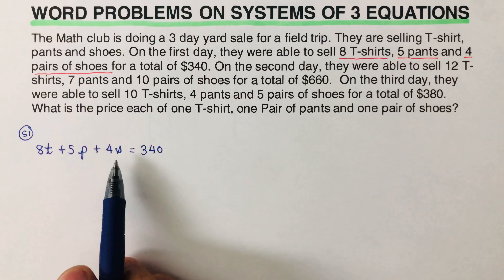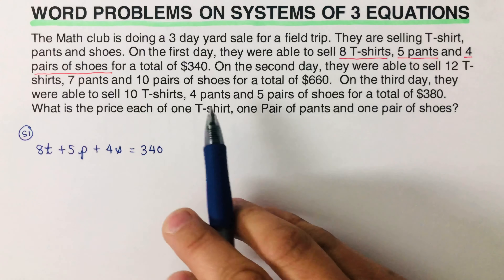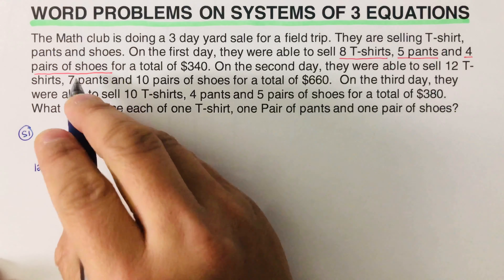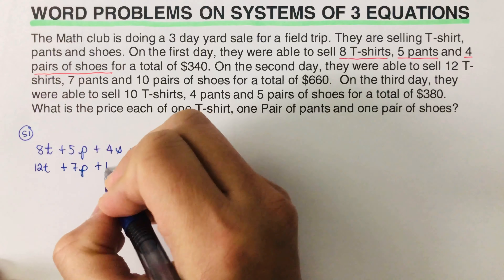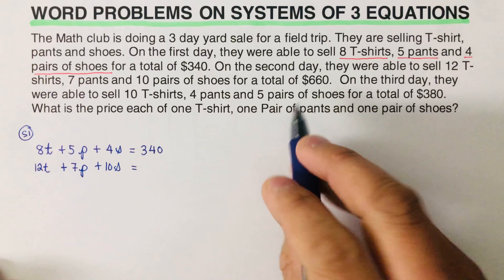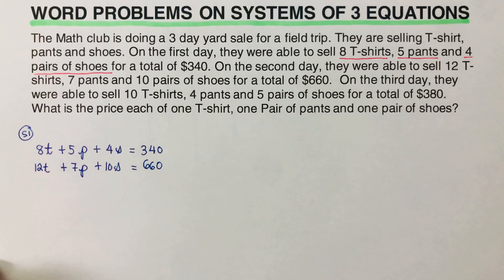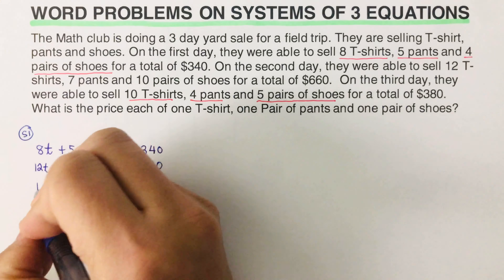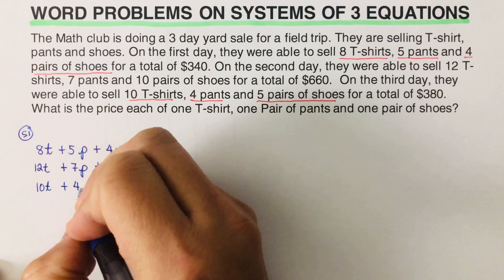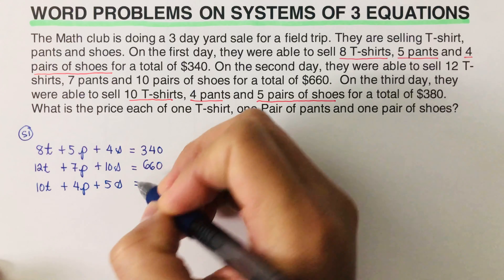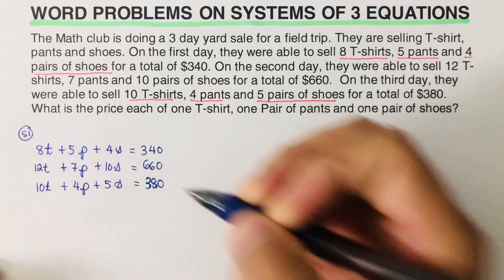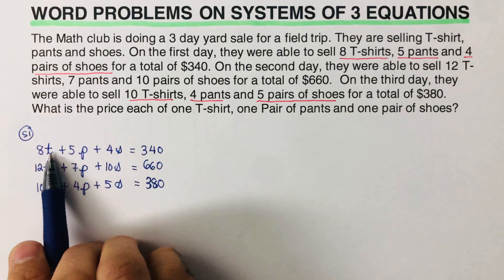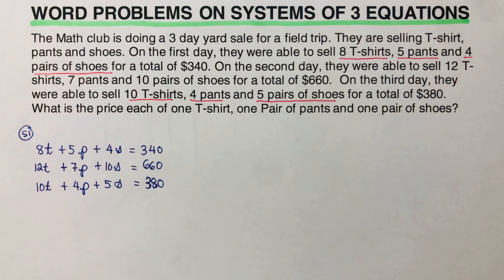We use t for t-shirt, p for pants, and s for shoes. The second equation from day two is: 12t + 7p + 10s = 660. The third equation from day three is: 10t + 4p + 5s = 380. That completes Step 1 — setting up the system of equations.